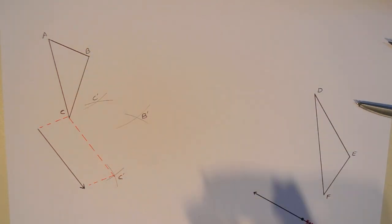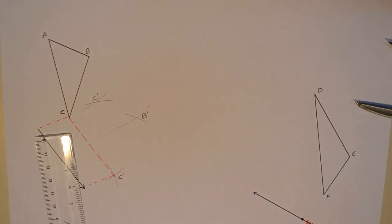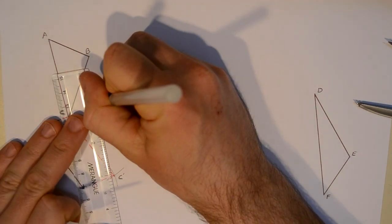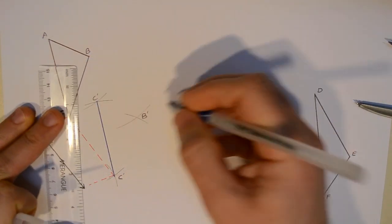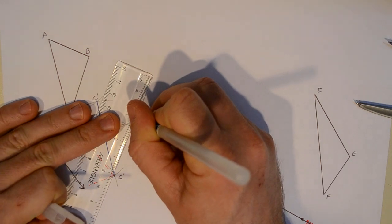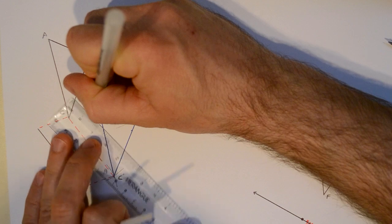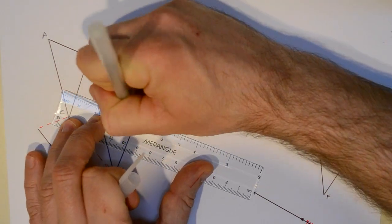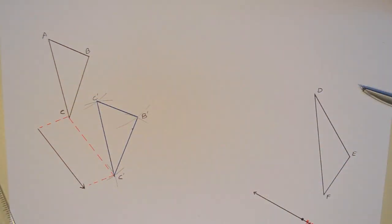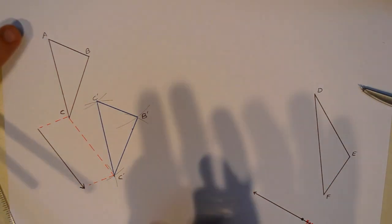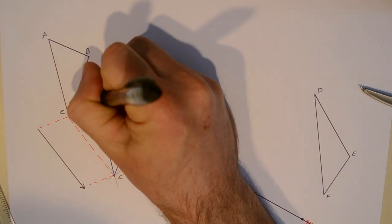This would be C prime right there and I can go ahead and construct, well draw at this point my new triangle, triangle A prime, B prime, C prime. And as I'm saying that I realized that I labeled one of those points, well two of those points C. Clearly one of them should have been A. So that is not a C prime. That is an A prime. So I'll just go ahead and fix that.